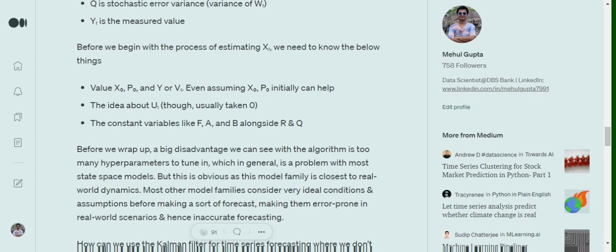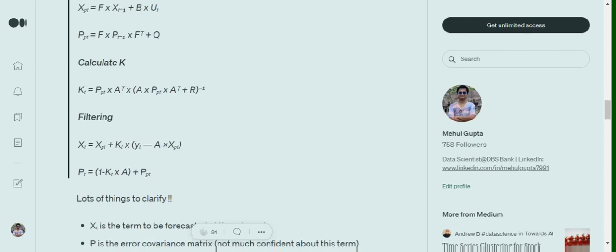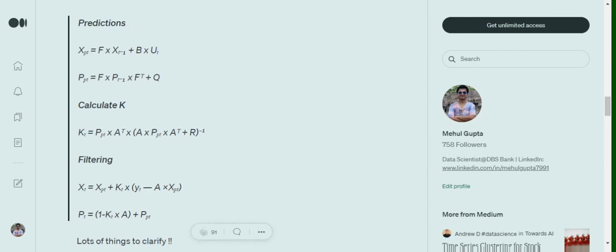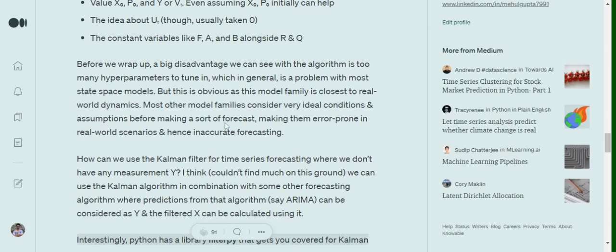Now, a big big problem before we wrap up. We can see in Kalman filter is that there are a lot of variables to determine. A lot of assumptions has to be made. Most of the time the force U_t is taken as 0. But we need to get with initial values of X_0, P_0, Y and V. Also, the constant variables like F, A, B alongside R, Q. We have been using five constants: F, B, Q, R, A as well. And they are transposed also. So they all need to be determined.